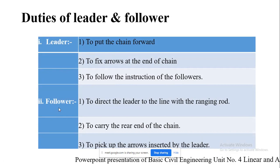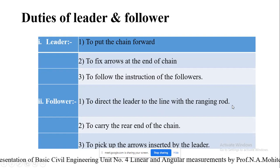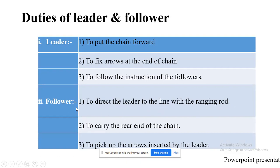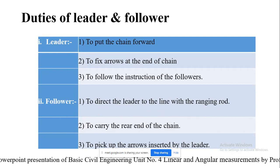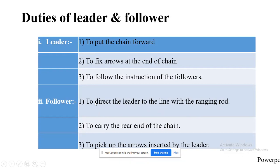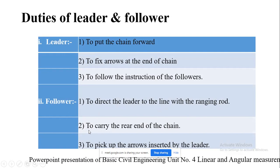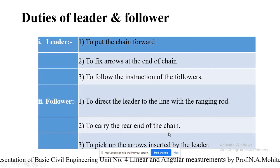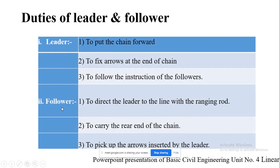The follower's duty is to direct the leader to the line with the ranging rod, guiding the leader to come in line. Whenever the chaining operation is done, the follower carries the rear end of the chain and picks up the arrows inserted by the leader. These are the duties of the leader and follower.